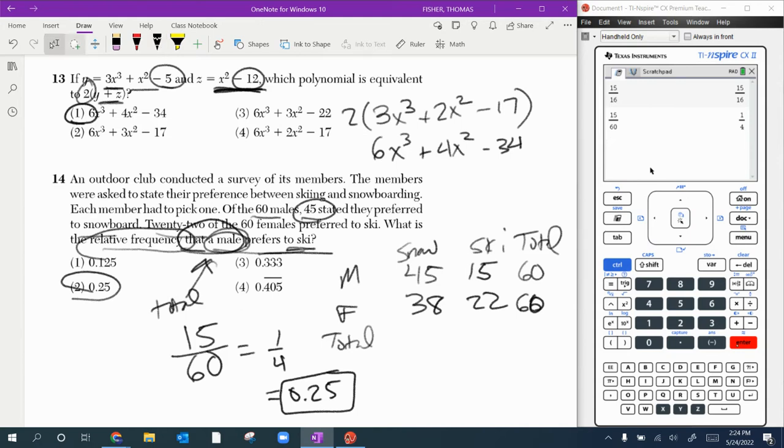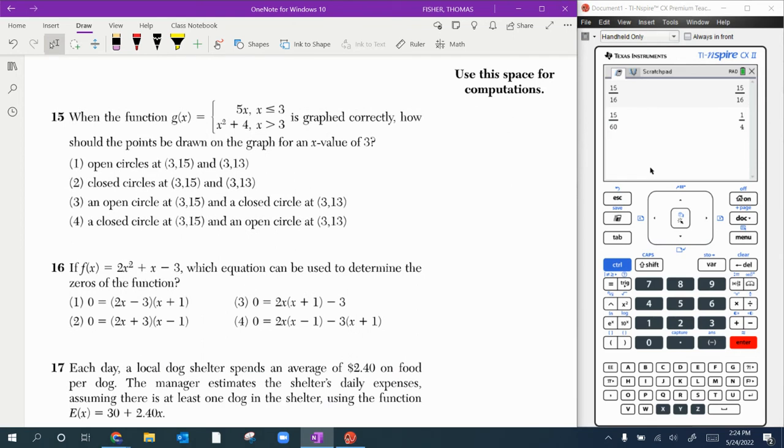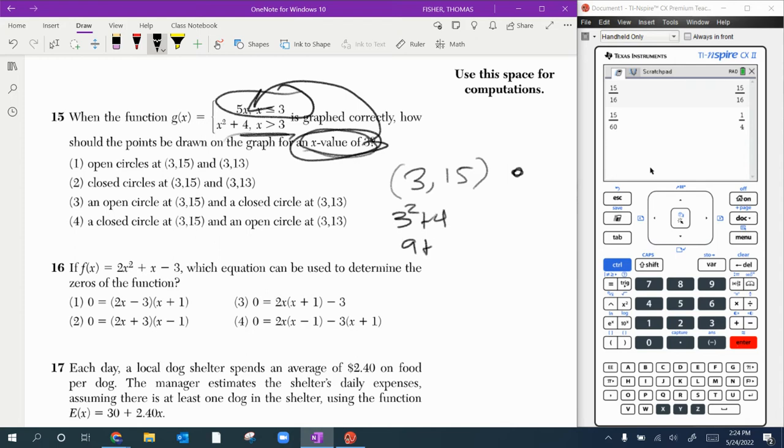Moving on here to the next. Number 15. So this is a piecewise function. There are two pieces, as you can tell. So what should the point be on the x value of 3? So x value of 3 is included on this part. It is not included in this part. So at 3, you plug 3 in for x there. That would be 15. So 3,15 would be a closed circle. Whereas the other part would be 3 squared plus 4, which is 9 plus 4, which is 13. That would be an open circle. So this one's closed and 3,13 is open because it's not included at that 3 in that piece. So closed circle at 3,15 and then open circle at 3,13, which is why this is choice 4.